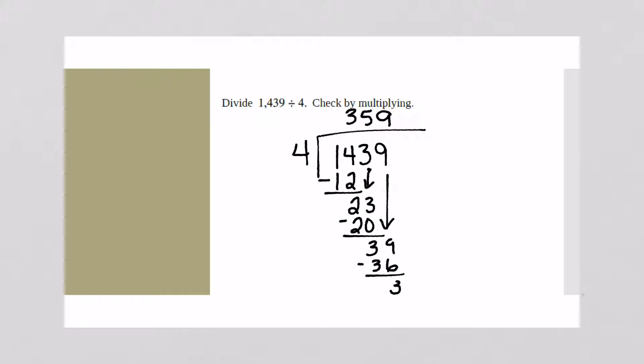So how you would write this remainder is like that. Or you could write it as 359 and 3 fourths. Where did I get this 4 from? It came from right here. This 3, that is our remainder. It came from right there.